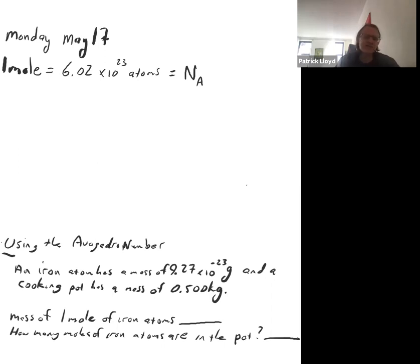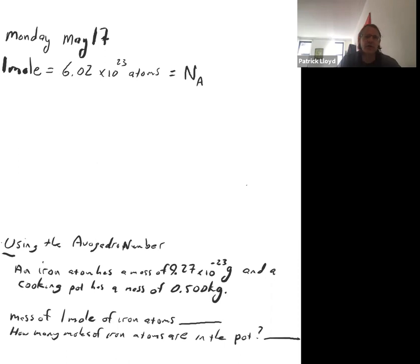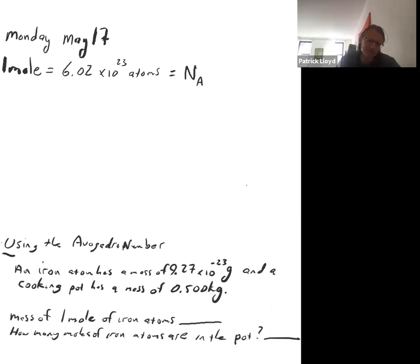It's just like using a dozen. Instead of saying you have 12 eggs, you say you have a dozen eggs. If you had 24 eggs, you'd say two dozen. The mole works the same way — it's just a little easier to say than 6×10²³.